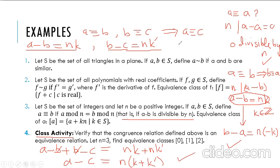We have shown the reflexive, symmetric, and transitive properties, therefore we have shown that the congruence relation defined in the above example is an equivalence relation. Now let's find the equivalence class of some integer a.